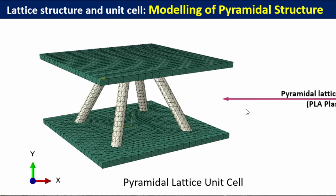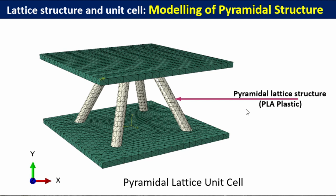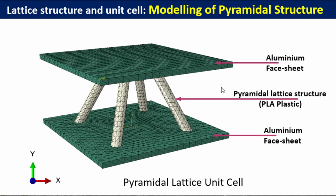Right at the centre you see the pyramidal lattice structure made up of 4 different strut legs, and PLA plastic is what we're going to use for that. At the top ends there's an aluminium face sheet that is going to be used to protect the lattice structure.